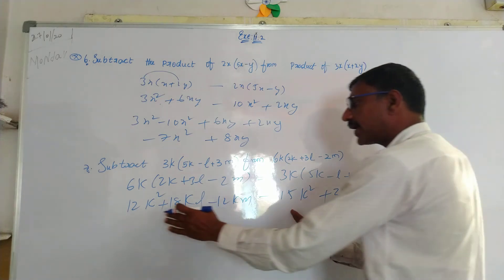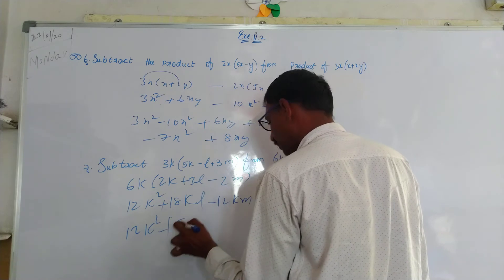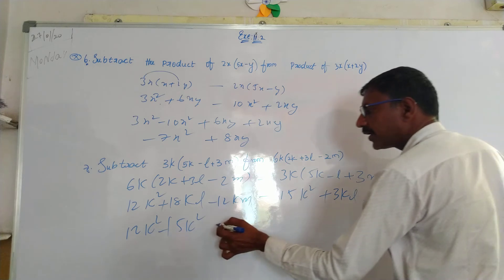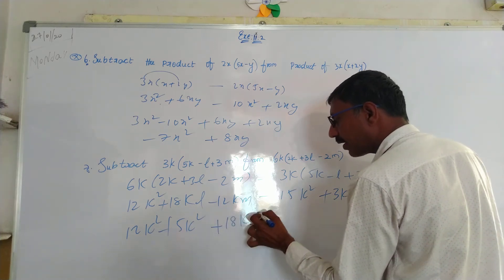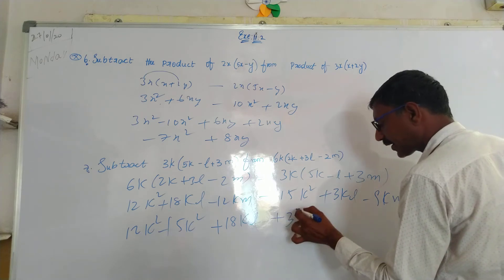We need to do like terms. 12K square minus 15K square, that's it. Next, 18KL, that's it, plus 3KL.